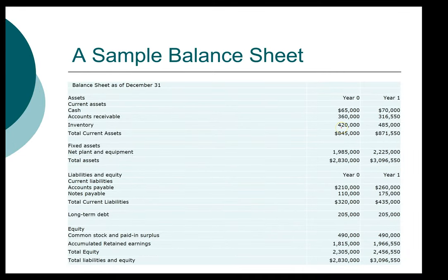Our current assets are $845,000 in year zero — remember, year zero is the beginning. They are $871,000 in year one, which is the ending current assets. Similarly for current liabilities: the total in the beginning is $320,000 and in the end is $435,000. We're going to use these numbers to compute the change in net working capital.